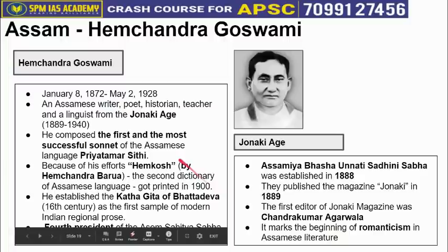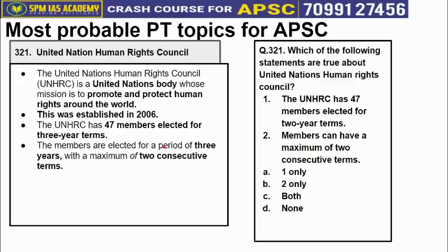In our segment of most probable PT topics for the upcoming APAC, we will cover topics 321 to 323. Topic 321 is about the United Nations Human Rights Council — a UN body whose mission is to promote and protect human rights across the world. It was established in 2006, has 47 members selected for 3-year terms, and a member can have at most 2 consecutive terms. Please attempt the question based on topic 321.